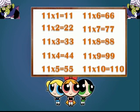Kids, I repeat table of 11, please follow me. 11 ones are 11. 11 twos are 22. 11 threes are 33. 11 fours are 44. 11 fives are 55. 11 sixes are 66. 11 sevens are 77. 11 eights are 88. 11 nines are 99. 11 tens are 110.